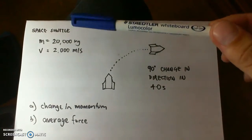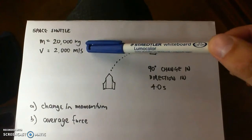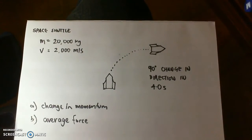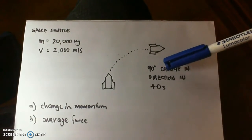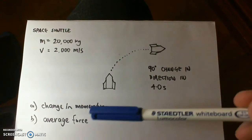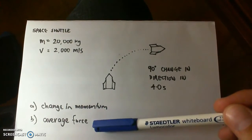The space shuttle is 20,000 kilograms and is traveling at 2,000 meters per second. It changes 90 degrees within 4 seconds as well. Now we're going to look for the change in momentum and the average force.